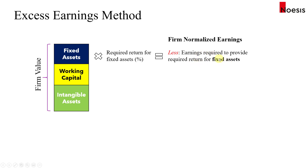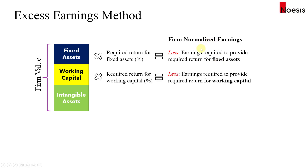In a way it's like a charge on the normalized earnings. We do the same thing with working capital to get the required earnings to provide the required return for working capital. So there is a charge on your capital when you use money to fund the purchase of fixed assets and working capital. Once we have these two figures, we subtract them from the normalized earnings, and that gives us the excess earnings.